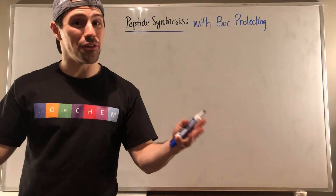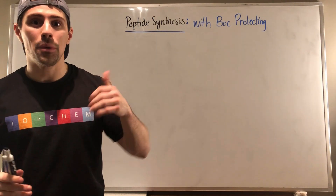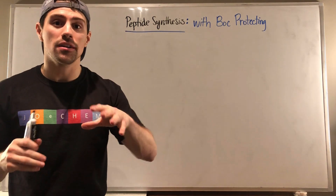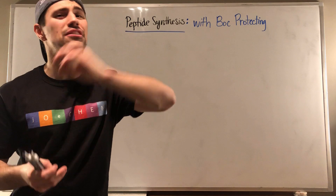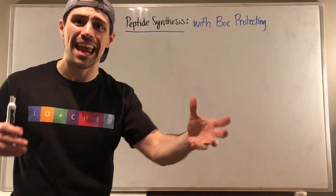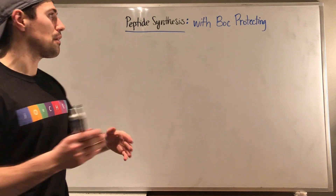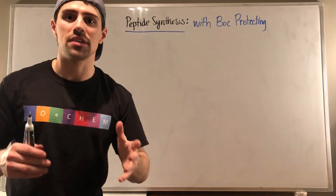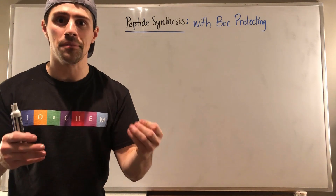Hey gang, welcome back for another video. We've talked about amino acids at length — how they are the building blocks for peptides, and when things get even longer, those peptides turn to polypeptides, also known as proteins. So in this video we're finally talking about how do we make those suckers? How do we make peptides? How do we take amino acids and string them together?